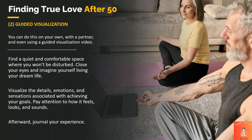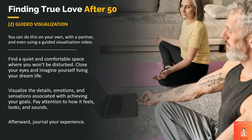The second step is guided visualization. You can do this on your own, with a partner, or even using a guided visualization video. Find a quiet and comfortable space where you won't be disturbed. Close your eyes and imagine yourself living your dream life. Visualize the details, the emotions, and the sensations associated with achieving your goals. Pay attention to how it feels, looks, and sounds. And afterward, journal your experience.